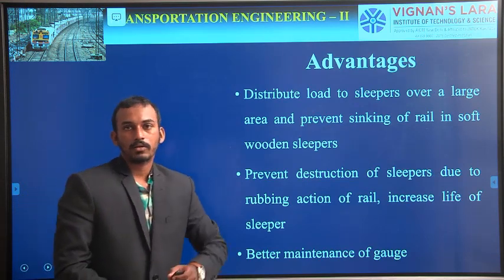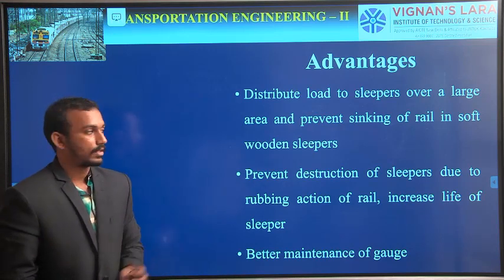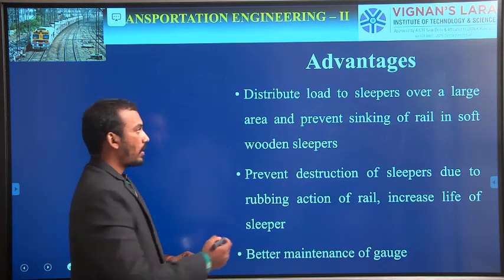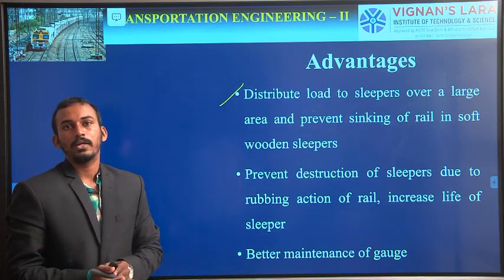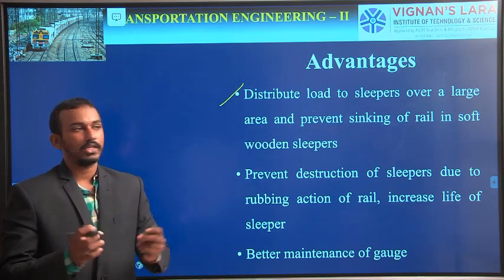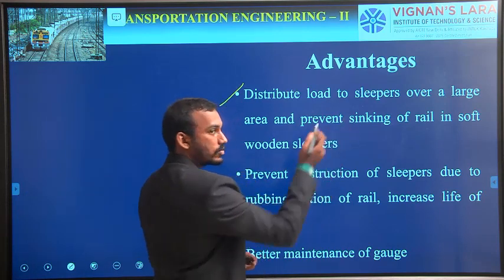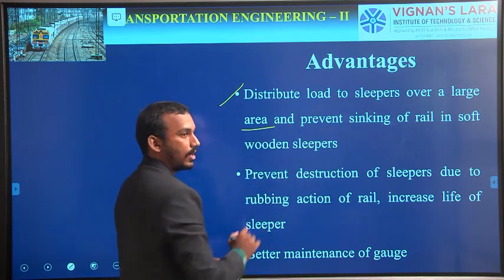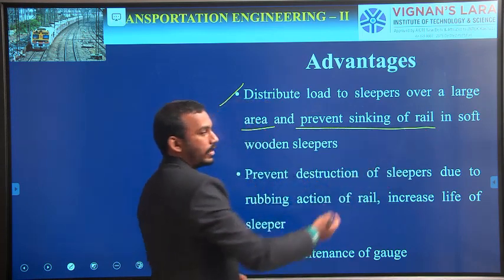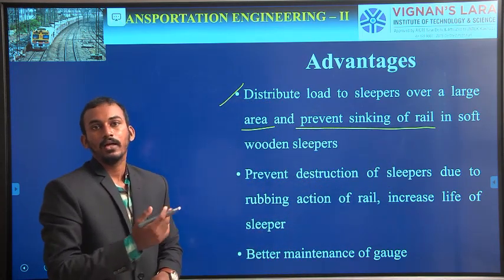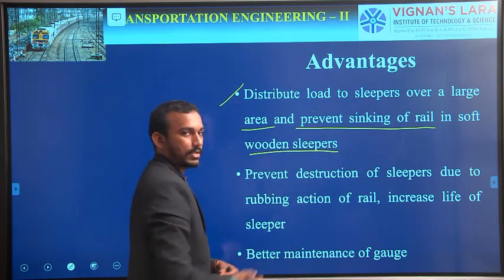So, what are the various advantages and disadvantages of bearing plates? Coming to the advantages: as the name indicates, it is a bearing plate, so it distributes the load over a larger area — it distributes the load to sleepers over a large area. It also prevents sinking of rails — here we call it punching of rails — preventing the sinking of rails in soft wooden sleepers.